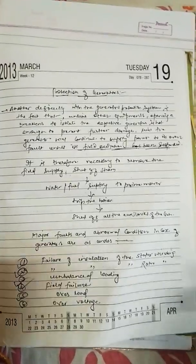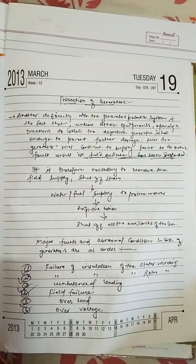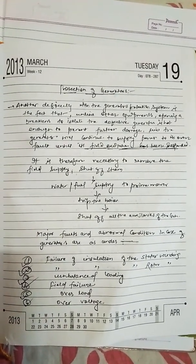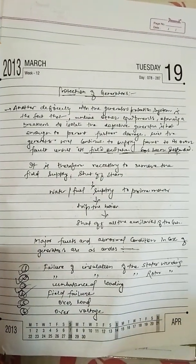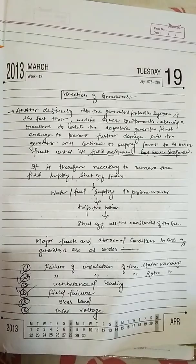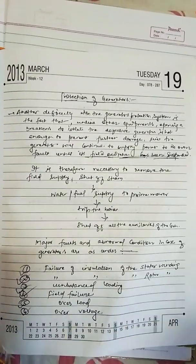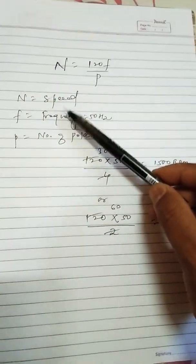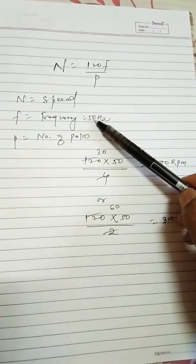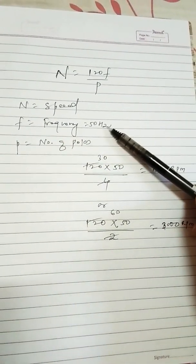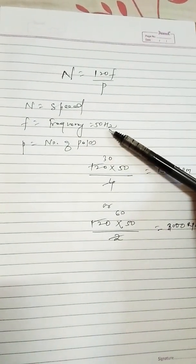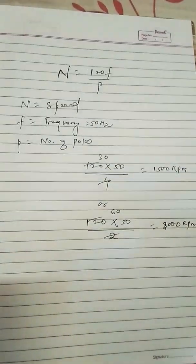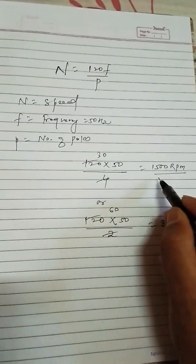Let me start with the basics of what happens inside a power generation or captive power plant. The turbine rotates with the help of steam or gas and is connected with a shaft. When the turbine reaches its RPM — either 1500 or 3000 RPM — we use the basic formula: n = 120F / P, where n is the speed, F is the frequency (50 Hz in India, 60 Hz in America), and P is the number of poles.